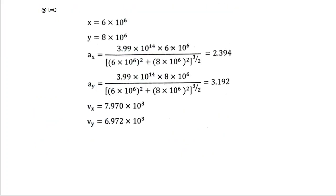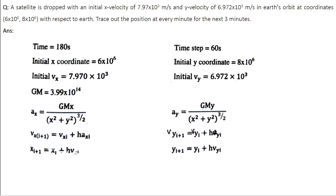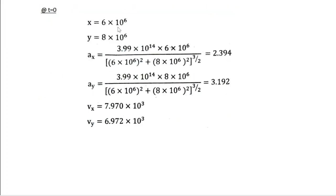First thing at time t = 0, all the parameters have the initial values. The value of x is directly given, value of y is directly given, Vx is given, Vy is given. We need to calculate Ax and Ay. So we know the expression for Ax. This is the value of GM, and x is this much divided by (x² + y²)^(3/2). So you get -2.394.